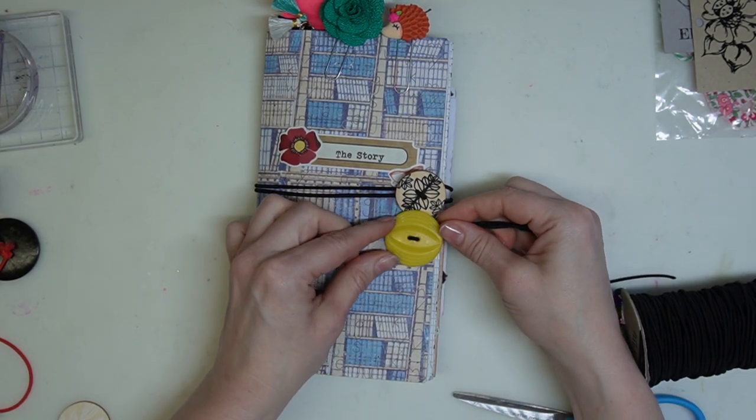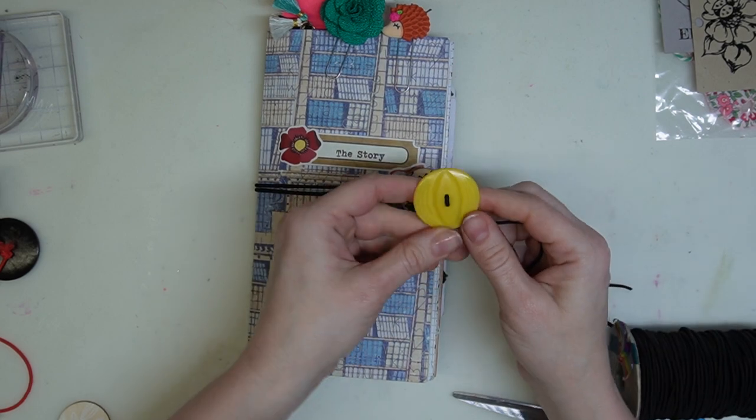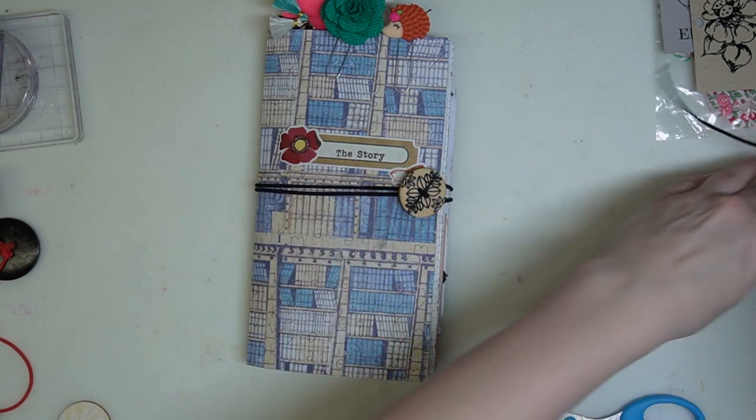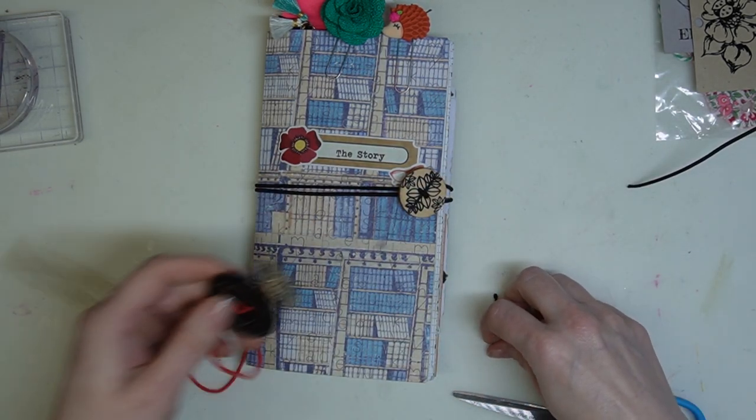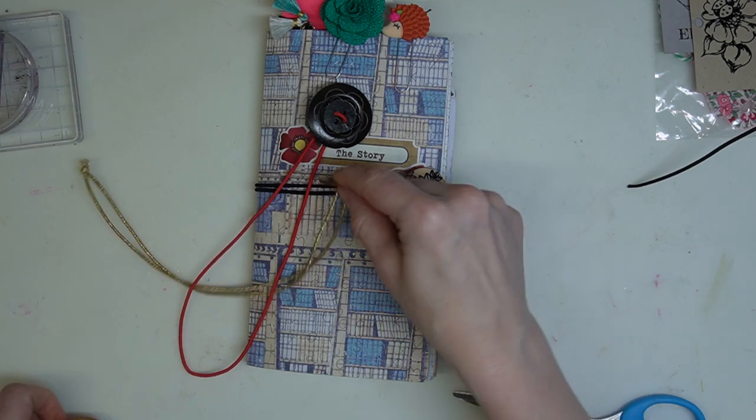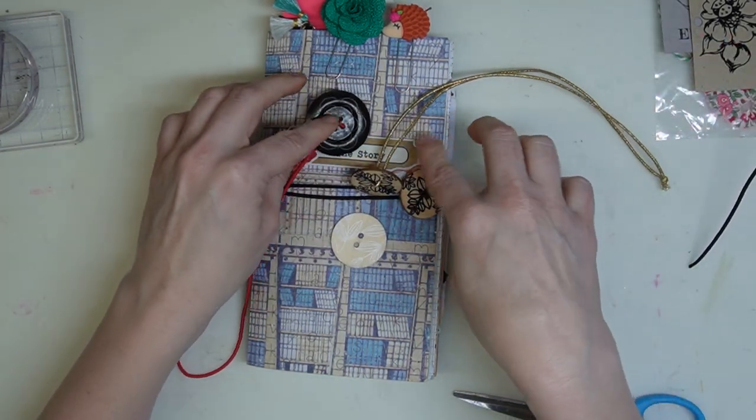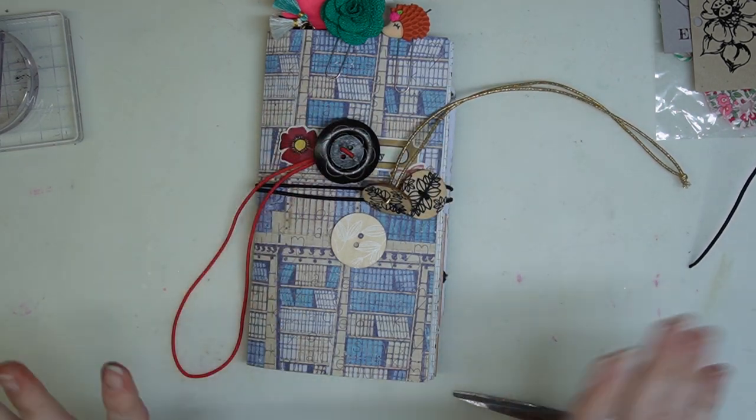Look how cute that looks. I'll probably use that for my May. I think there's a lot of yellow in that kit. All right friends, well there you have it. That's how you make a button closure with a big button and some elastic cording. So let me see what you make. Hope you like that. Bye.